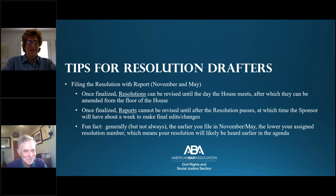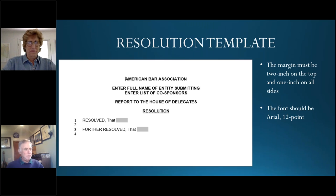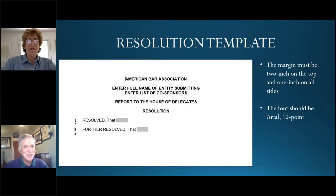This is what a resolution part looks like: it starts with a resolved clause, and if there are further resolved items, there will be further resolved clauses, with numbered lines and numbered paragraphs. The font should be Arial 12-point type. The report, on the other hand, looks like a pleading template — the resolution is thrown in there with one-inch margins on all sides, 12-point Arial for headings and text, 10-point for footnotes, and single-spaced with double spacing between paragraphs.